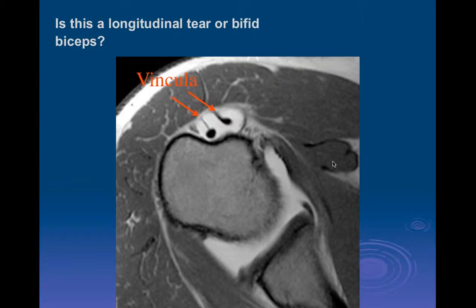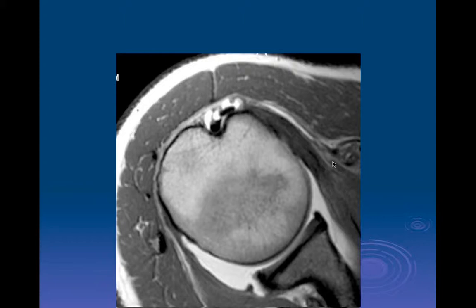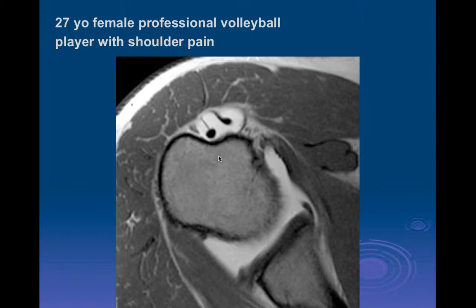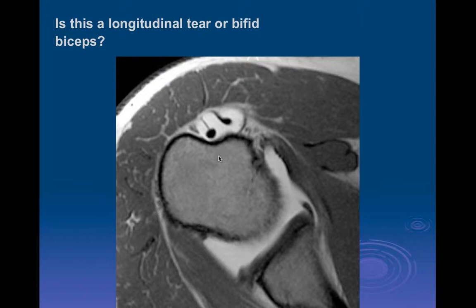Revisiting the bifid biceps case: if you see vincula, it's a slam dunk for bifid. If there's no vincula, but the tendon is nice and smooth, both components round and black, and you can follow it smoothly from the anchor all the way distally, you can call it a bifid long head of the biceps — but remember this is very rare. Longitudinal tears aren't common, but they're certainly not as rare as a congenital bifid. Most of the time if you see two structures and can follow them from the anchor all the way down, it's going to be a longitudinal split tear.